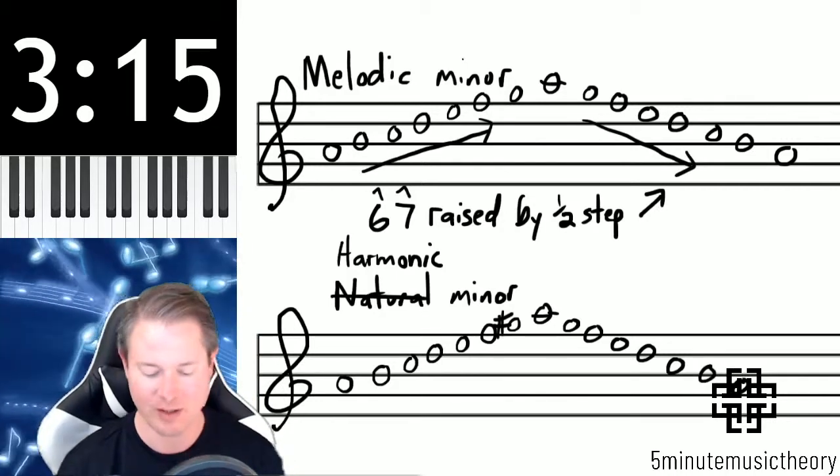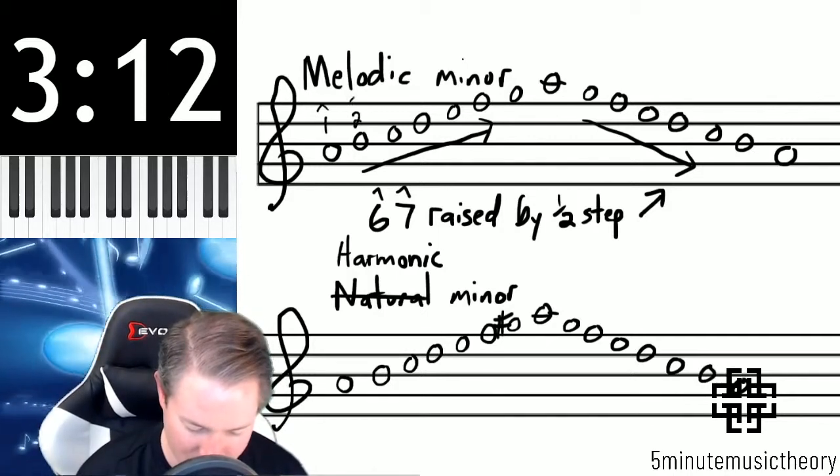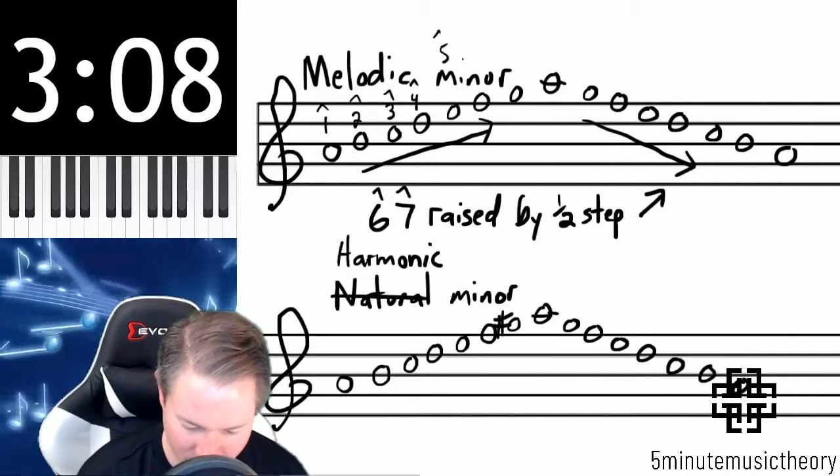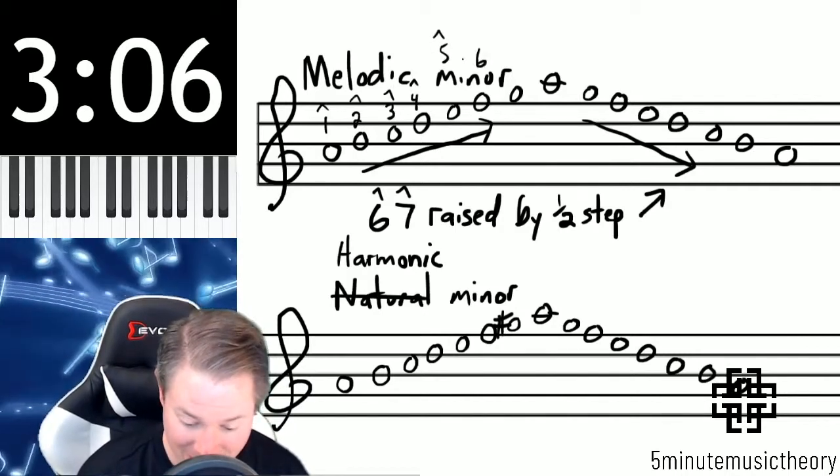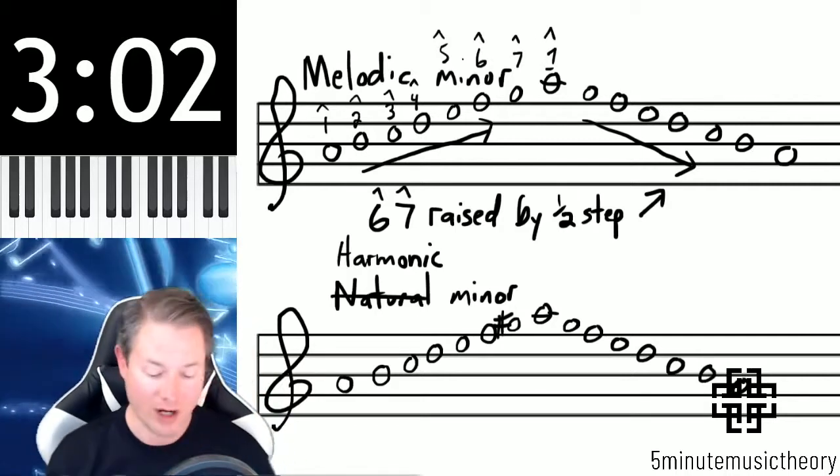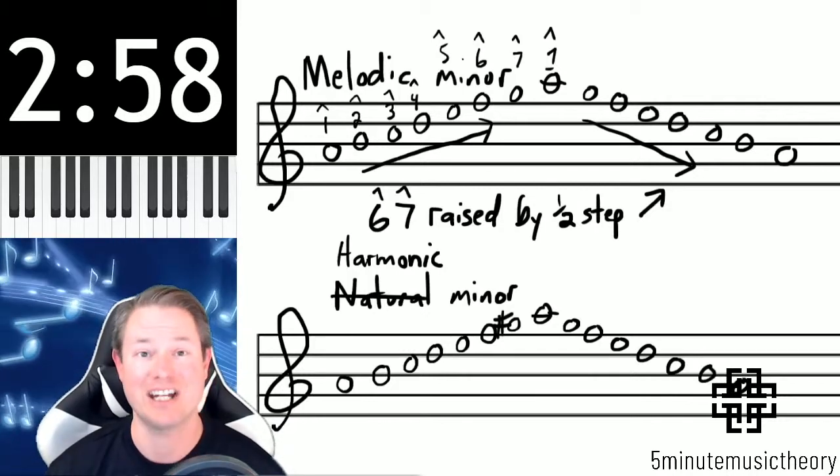We find the sixth and seventh scale degrees: here's one, two, three, four, and then I'm going to have to borrow some space from up here, five, here's six, and here's seven before we start repeating back to one. So the sixth and seventh scale degrees in this scale are F and G.